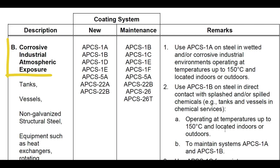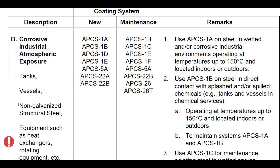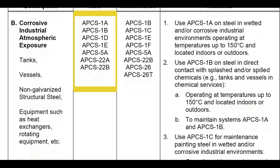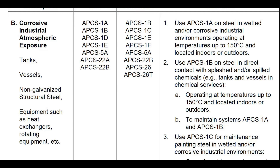For corrosive industrial atmospheric exposure — tanks, vessels, and non-galvanized structural steel equipment such as heat exchangers and rotating equipment — the coating system for new construction includes APCS1A, 1B, 1D, 1E, 5A, 22A, and APCS22B. For maintenance coating, APCS1B, 1C, 1E, 1F, 5A, D2B, 26, and APCS2060 are applicable.